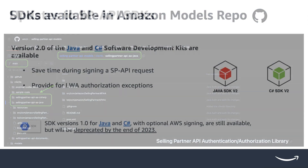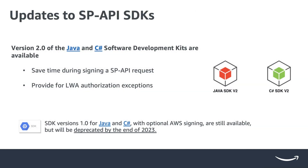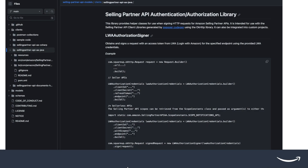Heads up: SDK version 1 for both Java and C# will be deprecated by end of 2023. We understand this is a lot to take in, so we have provided comprehensive resources and guides on connecting to SP API using SDKs.